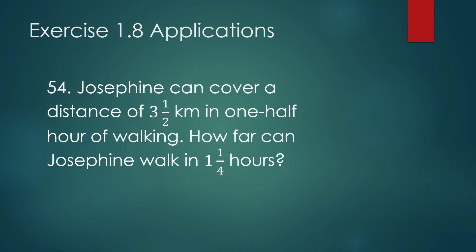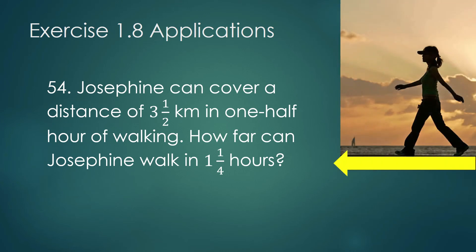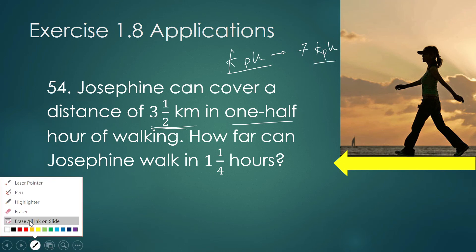Exercise 3: Josephine can cover a distance of 3 and a half kilometers in one half hour of walking. How far can Josephine walk in one and one-quarter hours? We need her speed in kilometers per hour. In one half hour she covers 3 and a half kilometers, so in one hour she can cover 3 and one-half times two, which equals 7 kilometers. Her speed is 7 kilometers per hour.